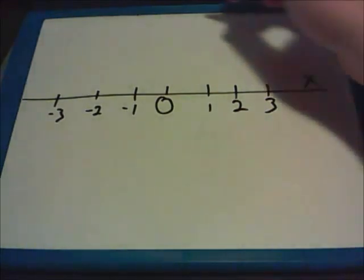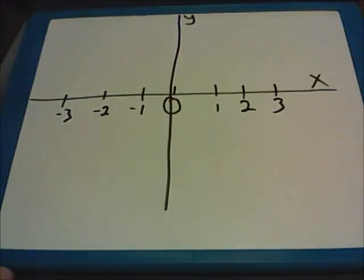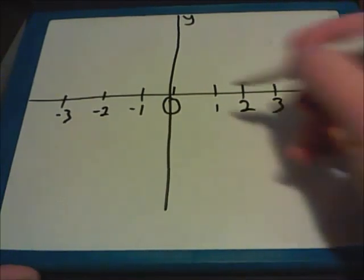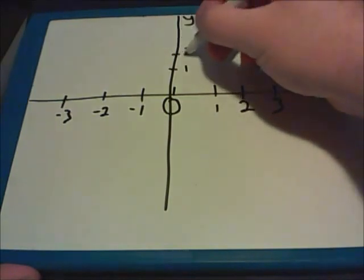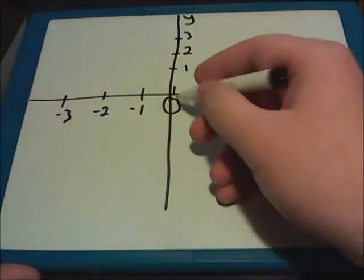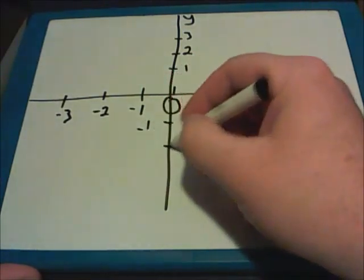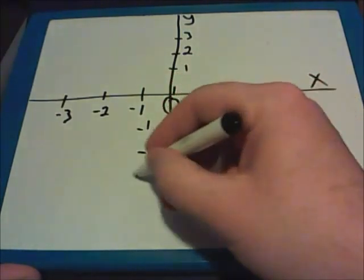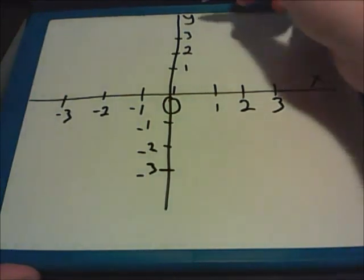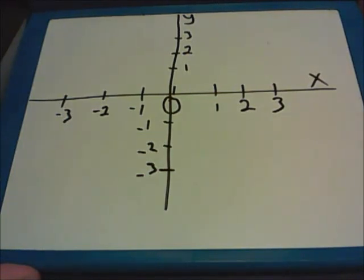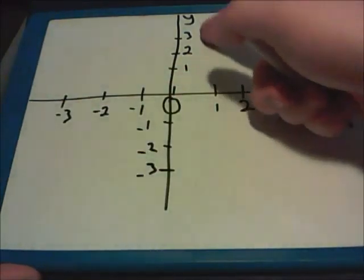Then we also have a line that runs from top to bottom. We call this the Y line or the Y axis. Again, there's zero in the middle. All the numbers above zero are positive: 1, 2, and 3. The numbers below zero are negative: negative 1, negative 2, and negative 3. Sometimes these lines are labeled for us with an X and a Y. Sometimes, however, they're not labeled for you. Just remember that you read from left to right and top to bottom, so X comes before Y.